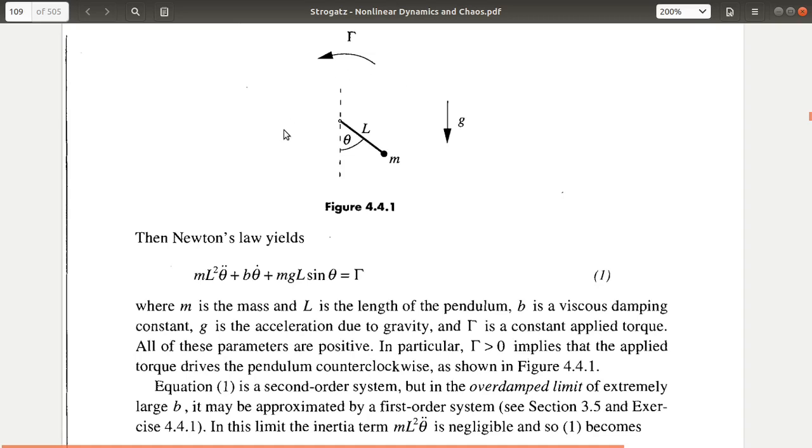So, it will show an oscillatory behavior. And if gamma is less than that torque, less than this MgL, it will not be able to reach this particular configuration. So, somewhere it will stop where this gamma will balance this load due to this mass, which is MgL sin theta. So, that is a fixed point.